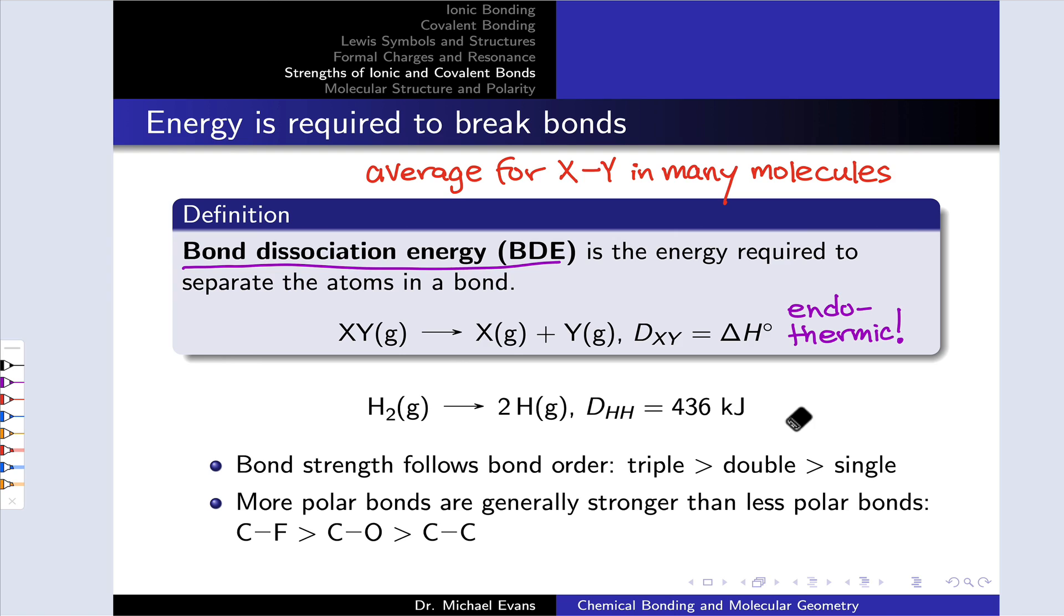Now, in general, a higher BDE is associated with a stronger bond, and this tends to be correlated with bond order. Particularly for the same types of bonded atoms, triple bonds are going to be stronger than double bonds, which are going to be stronger than single bonds in turn. So the BDE is correlated with the bond order, with a bond order of 3 having a higher BDE than a bond order of 1.